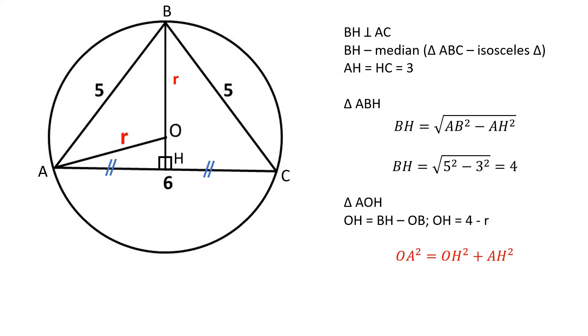Using the Pythagorean theorem, we can find OA by solving the following equation. After expanding and simplifying the equation, we're left with radius equals 25 over 8, which is 3.125.